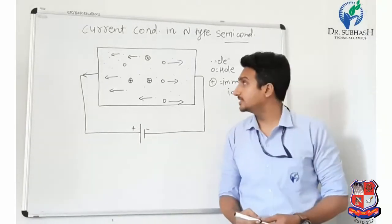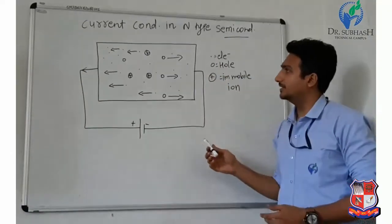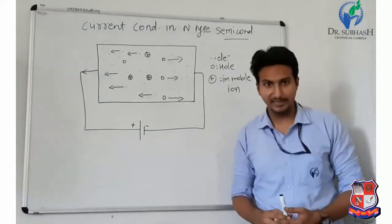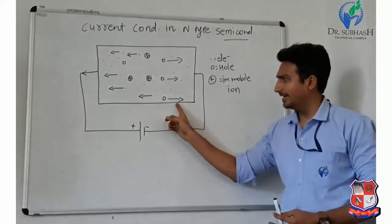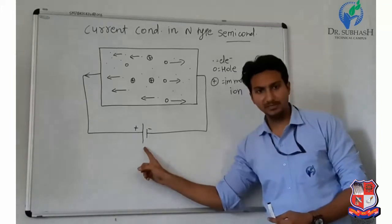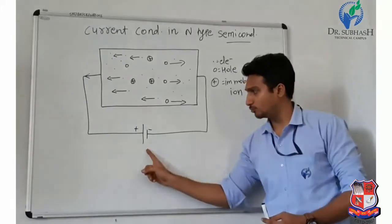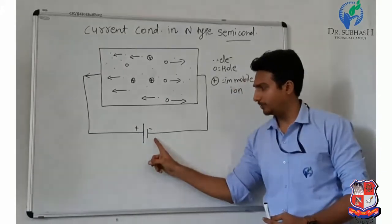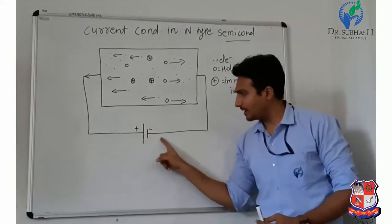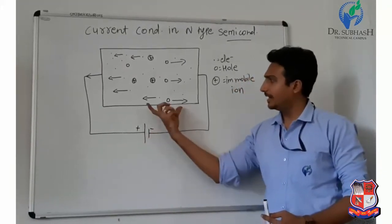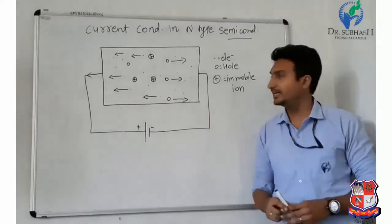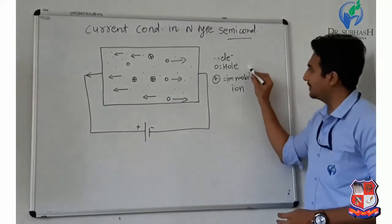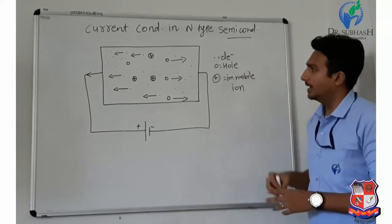Now we have to understand current conduction in N-type semiconductor. This is the N-type semiconductor with external power supply. The battery has a positive terminal and a negative terminal. The majority charge carrier is the electron and the minority charge carrier is the hole.